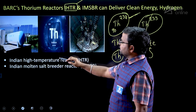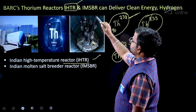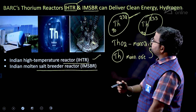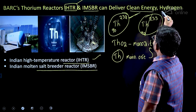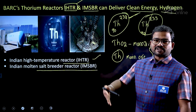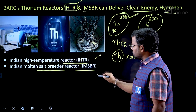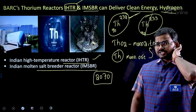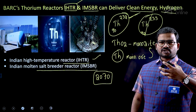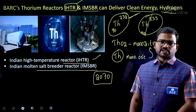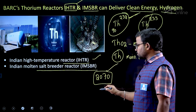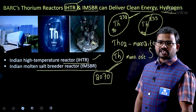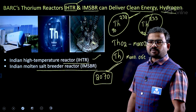These two reactors — IHTR and IMSBR — are capable of producing clean energy including hydrogen. India has a net zero carbon emissions target for 2070. To achieve this target, we need to develop these types of clean energy sources.